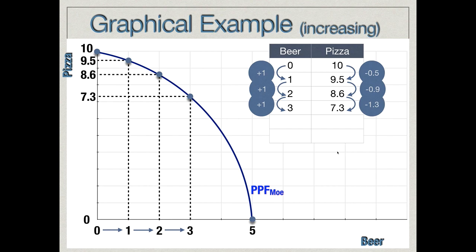In closing, make sure you're comfortable with this. If you are asked for a production possibilities frontier that exhibits constant opportunity cost, it is a straight downward-sloping line. If you're asked for a PPF that exhibits increasing opportunity cost, it is a curved line. Students sometimes forget or get confused about this concept, so hopefully this helps you understand the difference between constant and increasing opportunity cost and how that assumption impacts the shape of the production possibilities frontier.